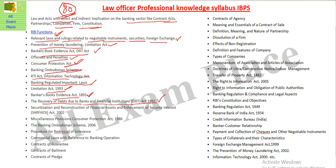After that, there is the SARFAESI Act, 2002. You need to know all the details and all the questions from this act. Then the Consumer Protection Act — miscellaneous type. Then the Banking Awards Management, which is very important — you need to know all the details. Then the procedural grievances procedures.